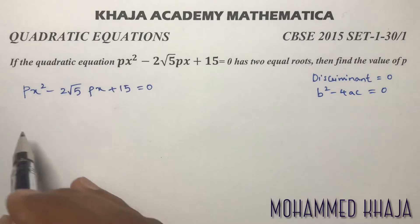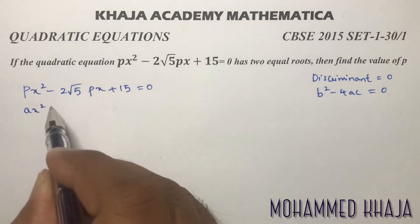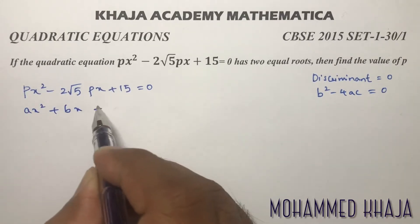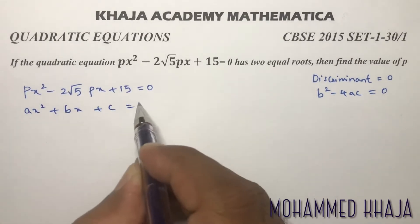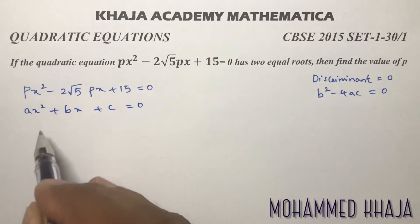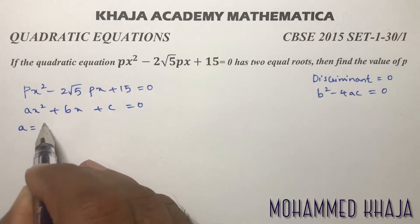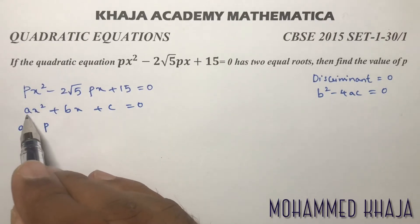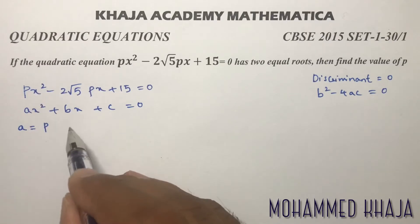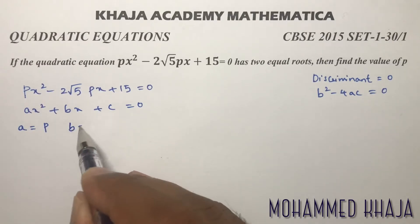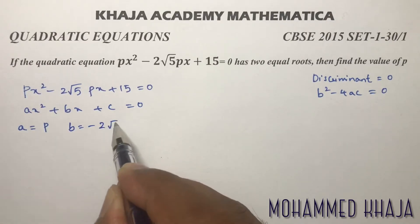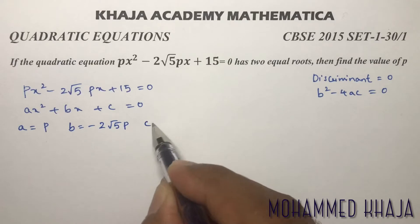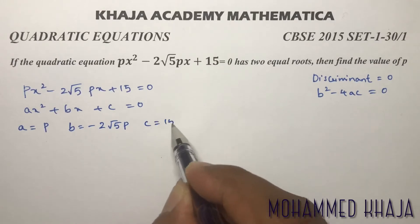Write the standard quadratic equation ax² plus bx plus c and compare the values of a, b, and c. Here a is p, because a is the coefficient of x². b is minus 2√5·p, and c is 15.